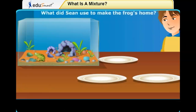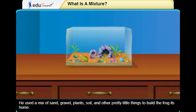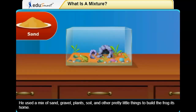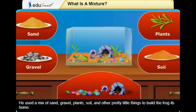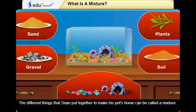What did Sean use to make the frog's home? He used a mix of sand, gravel, plants, soil, and other pretty little things to build the frog its home. The different things that Sean put together to make his pet's home can be called a mixture.